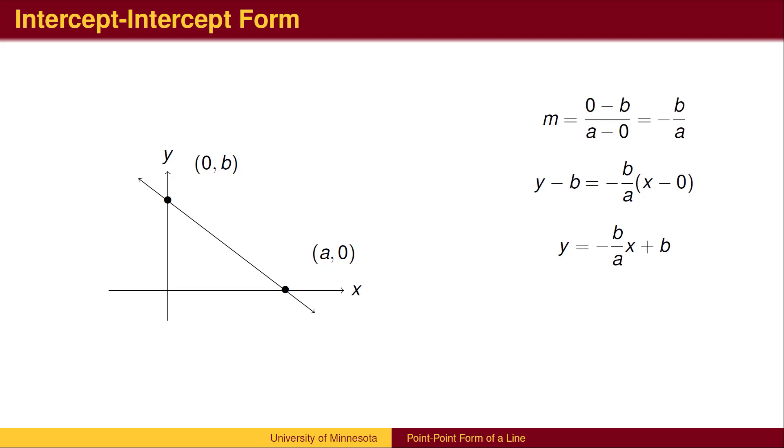Which can also be written as y equals negative b over a times x plus b. We could have arrived at this formula directly, as this is the slope-intercept form of a line.